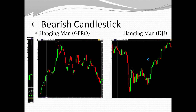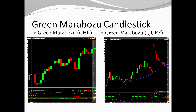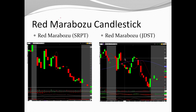A green marubozu — remember, I said these are not common — signals strength from the bulls, indicating a strong move to the upside. Another green marubozu with no top or bottom wick signals strong bullish strength. A red marubozu with no top or bottom wick signals strength to the downside.